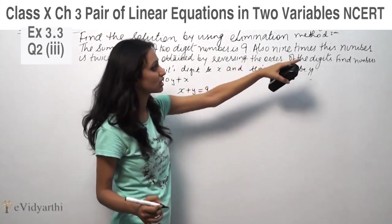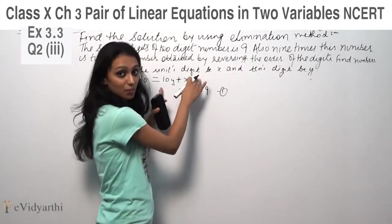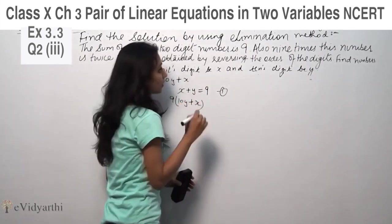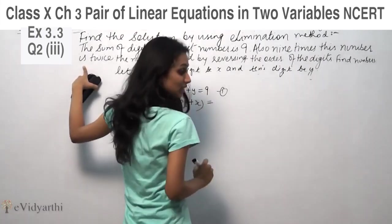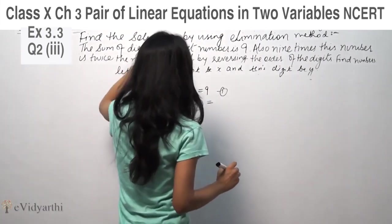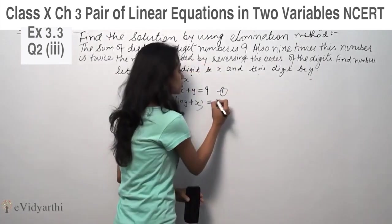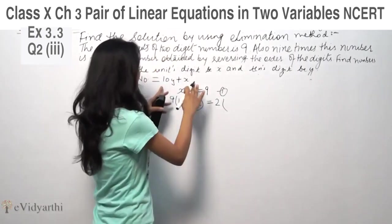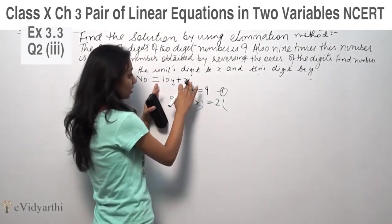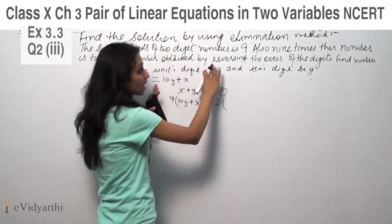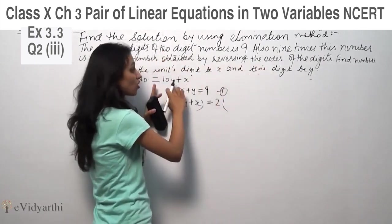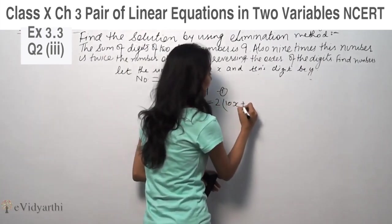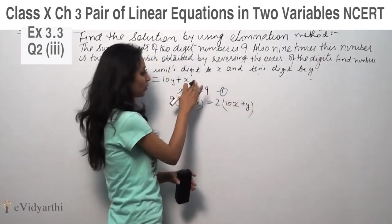Now it says also 9 times this number. This number times 9. Now 9 times this number equals twice the number obtained by reversing the order of the digits. Twice, it means the number obtained by reversing the order. The order of digits is reversed, then twice.